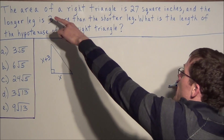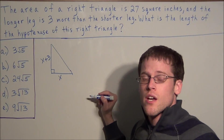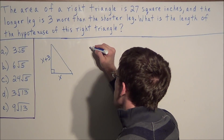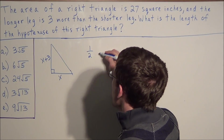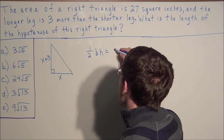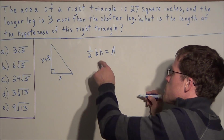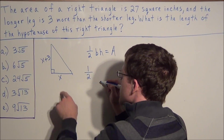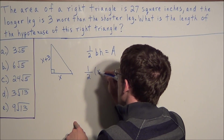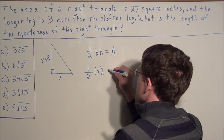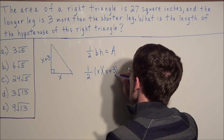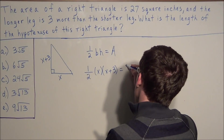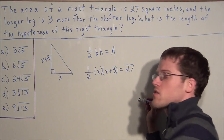We were told the area of the triangle is 27 square inches. In general the area of a triangle equals one half the base times the height. So we write one half times base times height equals area. Substituting, we have one half times x times (x plus three) set equal to 27. We'll leave the units out because all we care about is the numerical answer.